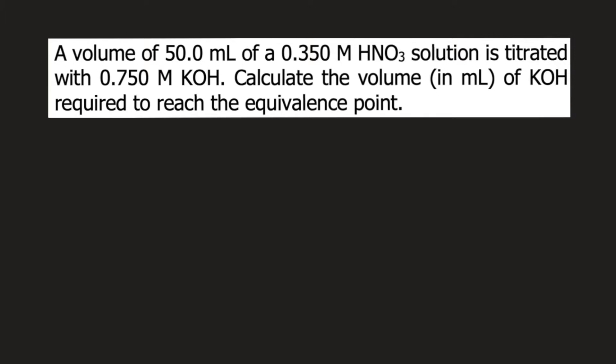First, write the acid-base reaction between nitric acid and potassium hydroxide. We have nitric acid plus potassium hydroxide. The products are potassium nitrate and water. If you check this reaction, it's already balanced.